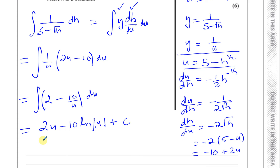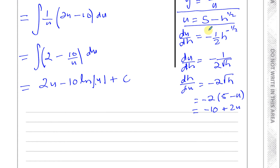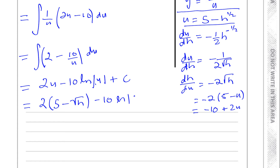Now we replace the u's with what u equals, since the answer must be in terms of h. u equals 5 minus root h, so we write 2 times (5 minus root h) for the first term, and minus 10 times the natural log of the modulus of (5 minus root h) for the second term, plus c.